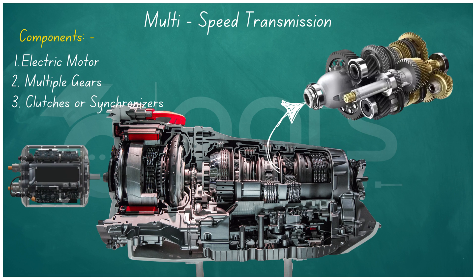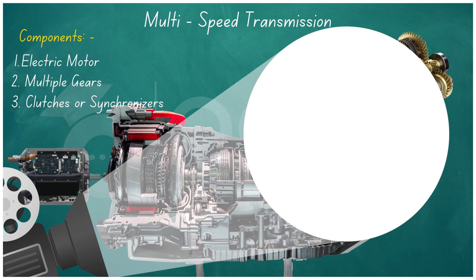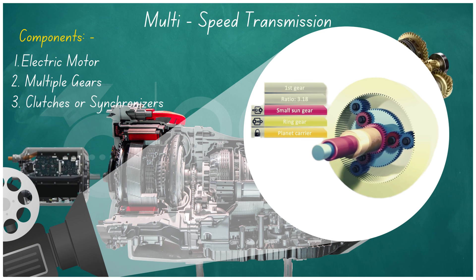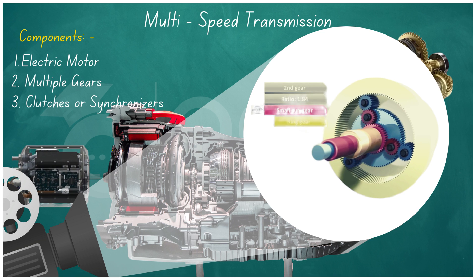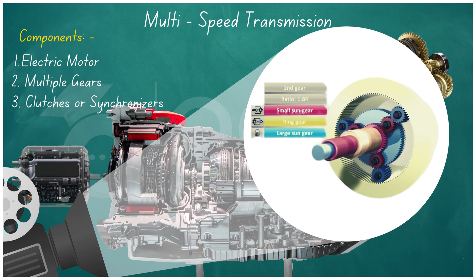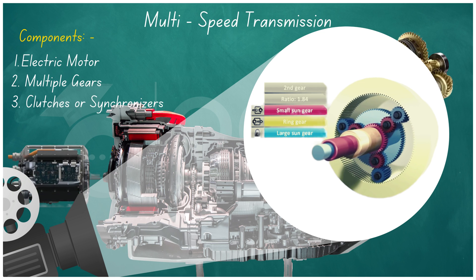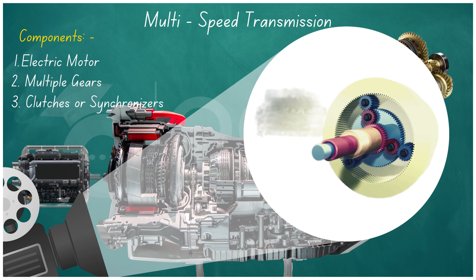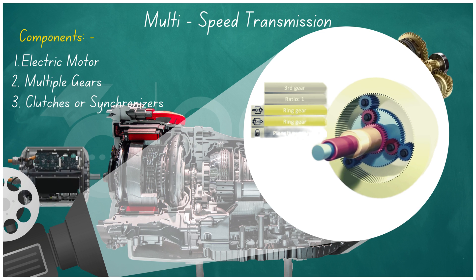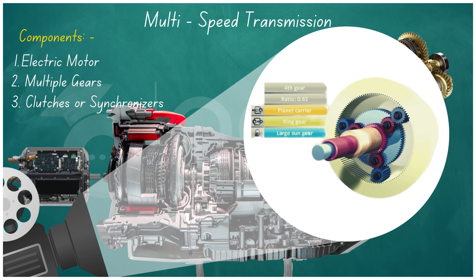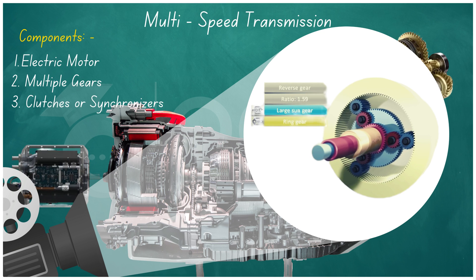The transmission system allows the driver or the vehicle's control system to select different gears based on driving conditions, performance needs, and efficiency goals. Lower gears provide higher torque and acceleration while higher gears offer higher speed and efficiency. When a gear change is initiated — either manually by the driver or automatically by the vehicle's control system — the appropriate clutch or synchronizer is engaged, disengaging the current gear and connecting the motor to the new gear for a smoother, seamless driving experience. While multi-speed transmissions can enhance performance, they also introduce complexity, cost, and weight that engineers must carefully balance.